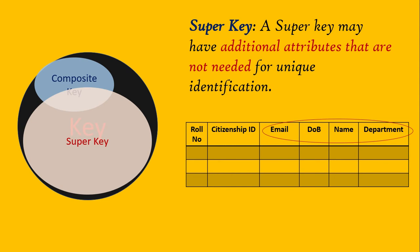Next comes super key. A super key is a set of attributes which may have some extra or additional attributes that are not actually needed to uniquely identify a tuple. For example, email ID, date of birth, name, and department together form a key — yes, it is a key — but if you think about the necessary attributes, department is quite irrelevant to be part of the key. So that is what a super key is. A super key may be a composite key or any other kind of key.